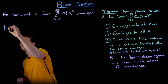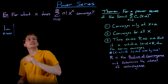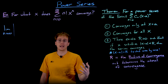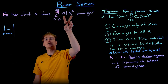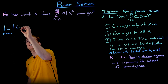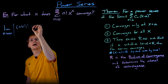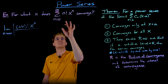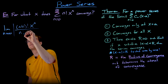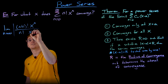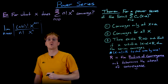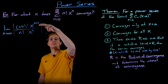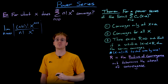We look at the limit as n approaches infinity of the ratio of the (n+1)th term to the nth term. The (n+1)th term is found by replacing each n with n+1 in the general term, giving us (n+1) factorial times x to the power of n+1. We divide that by the nth term, which is n factorial times x to the power of n.